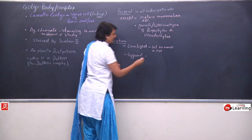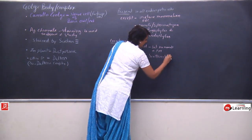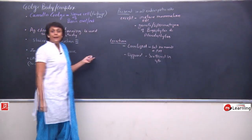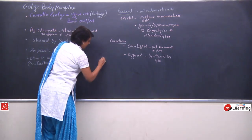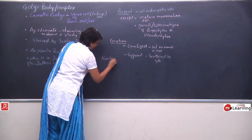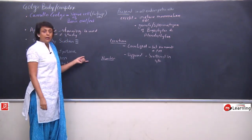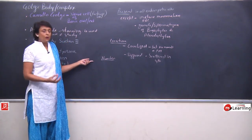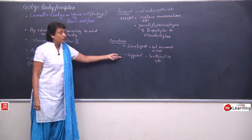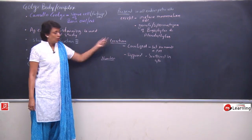Diffused means scattered in cytoplasm. In animal cells, normally the number of Golgi bodies is one; in plants, the number can be more — more dictyosomes — and in plants they are diffused, meaning scattered. In animals they are normally localized.